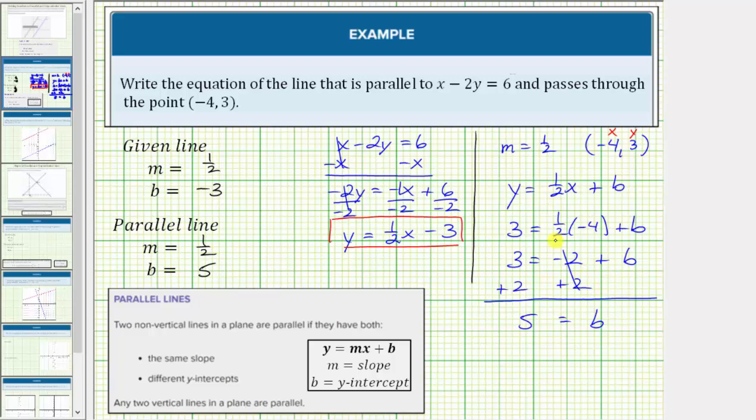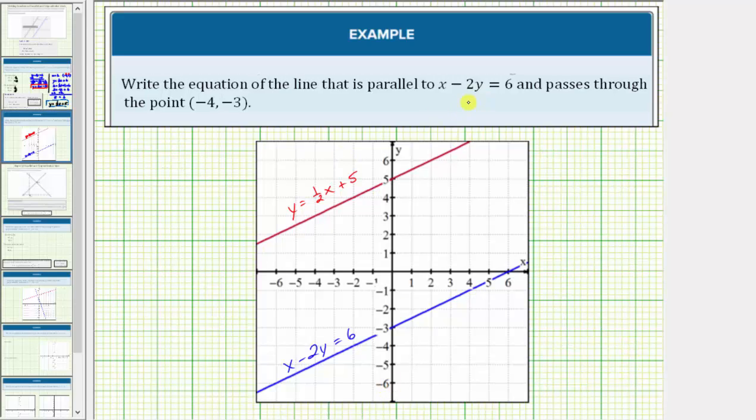Which means the equation of the parallel line is y equals 1/2 x plus 5. Let's verify this graphically. The blue line is the graph of x minus 2y equals 6. The red line is the graph of y equals 1/2 x plus 5, which is the equation that we found. Notice how this line is parallel to the given line. It also passes through the point (-4, 3), which would be this point here. Which verifies our work is correct.